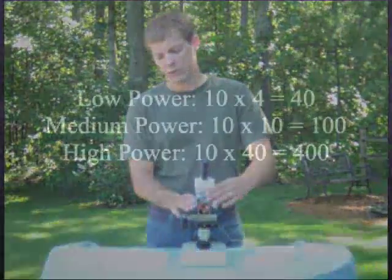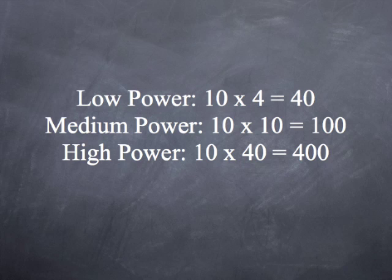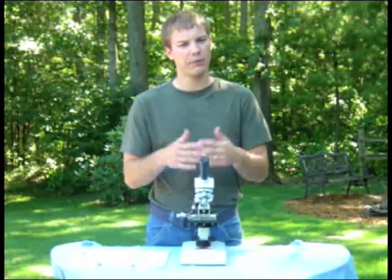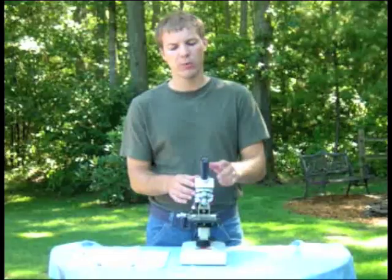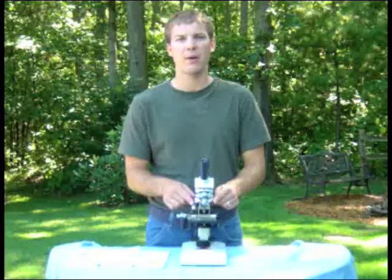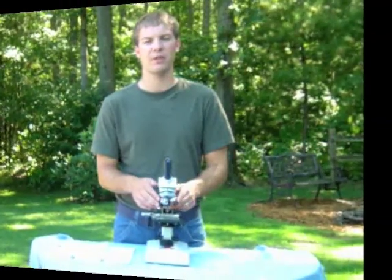So we have 10X 4 = 40 total magnification. 10X 10 = 100 total magnification. And 10X 40 = 400 total magnification. So if you're asked what the total magnification of your sketch or drawing is, you want to multiply the eyepiece times whatever lens you're using — that will give you the total magnification.